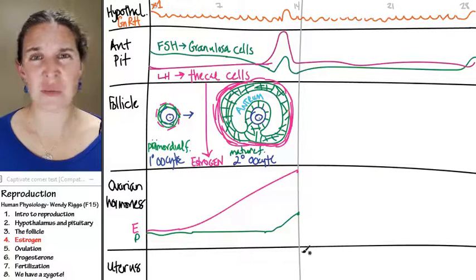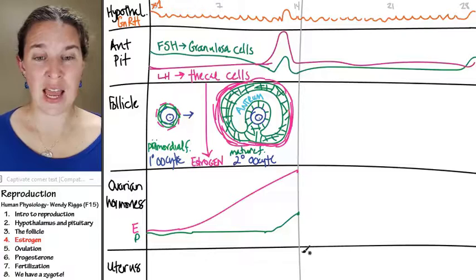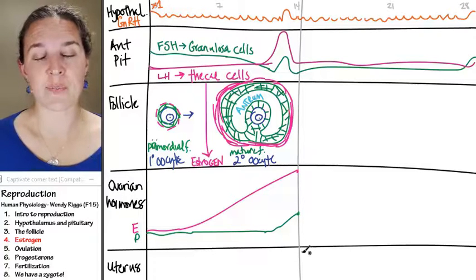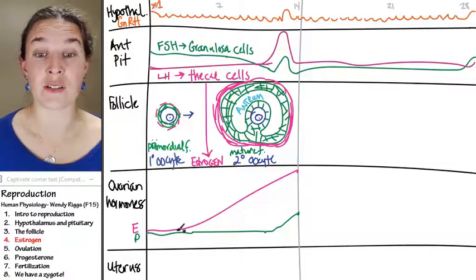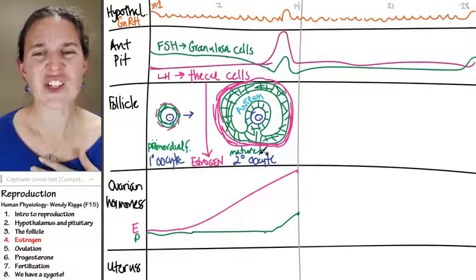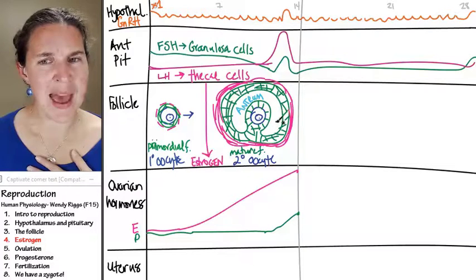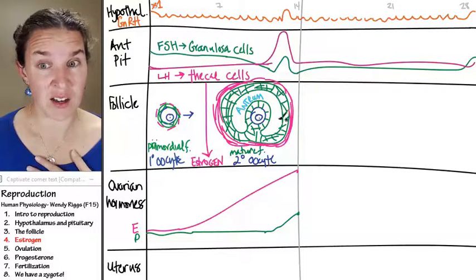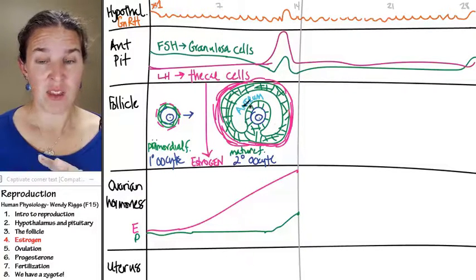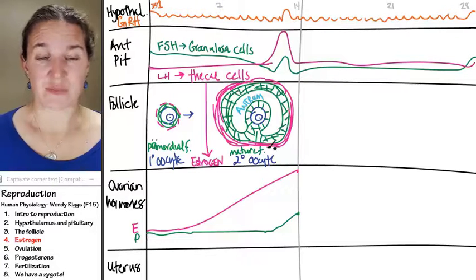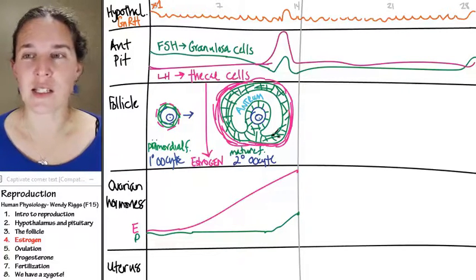Progesterone doesn't play a role in the actual ovulation itself. Okay. So let's talk about what estrogen does do. And don't forget the fact that our granulosa cells are still producing mad amounts of fluid here that are doing their fluid-y thing. Okay. So look at this. This is crazy talk.